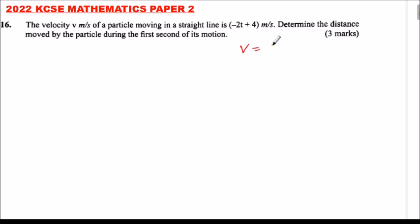v is equal to (-2t + 4) meters per second. To get displacement, what do we do? We say v equals displacement over time.